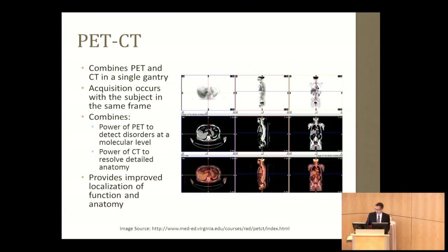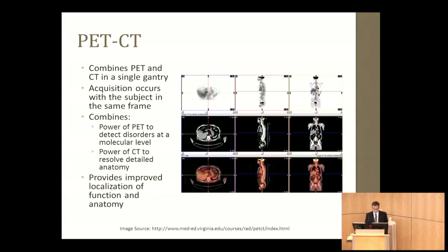One of the major advancements in diagnostic imaging was the development of PET-CT systems that combine the two into a single gantry. This allowed us to get the benefits of both technologies — the ability of PET to examine disorders at the molecular level, while also getting the ability of CT to accurately localize anatomy. The combination of these has been really successful in terms of clinical diagnosis, and is a very good example of how important visualization is to image interpretation.